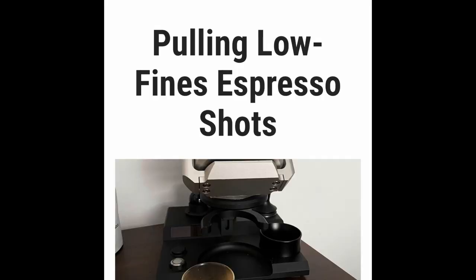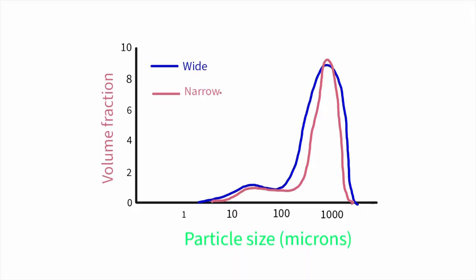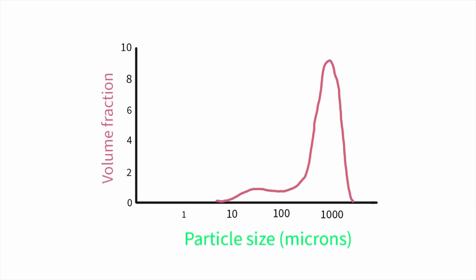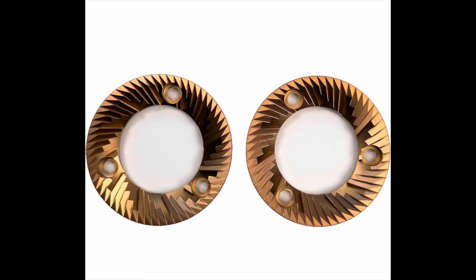Now how wide this distribution curve is will vary depending upon the grinder. So a wider curve means that you have a wide range of particles of different sizes. A narrower curve means that the particles are about the same size. So the theory is that with narrower curves, as all the particles are the same size, they will extract similarly, which means you get more even extractions and more clarity. For example, the SSP espresso burrs.